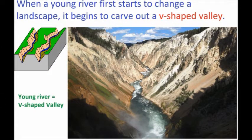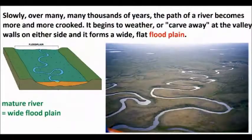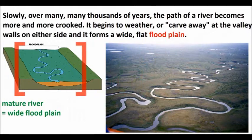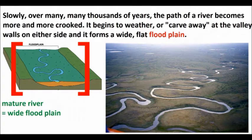Rivers come in all different ages. When a young river first starts to change a landscape, it begins to carve out a V-shaped valley. Slowly, over many, many thousands of years, the path of a river becomes more and more crooked. It begins to weather or carve away at the valley walls on either side, and it forms a wide, flat floodplain.